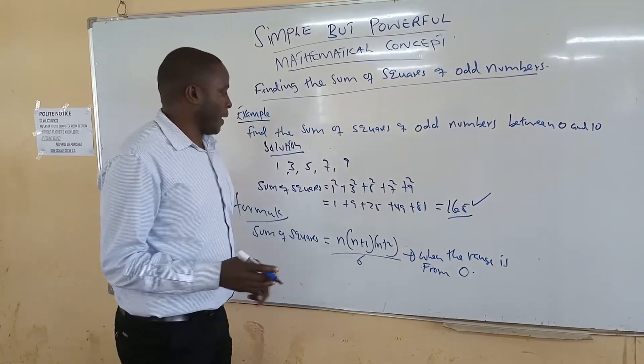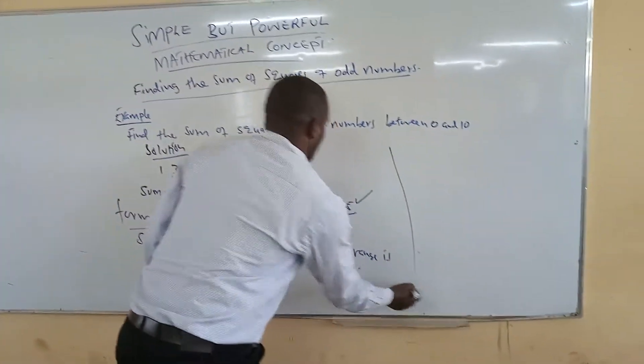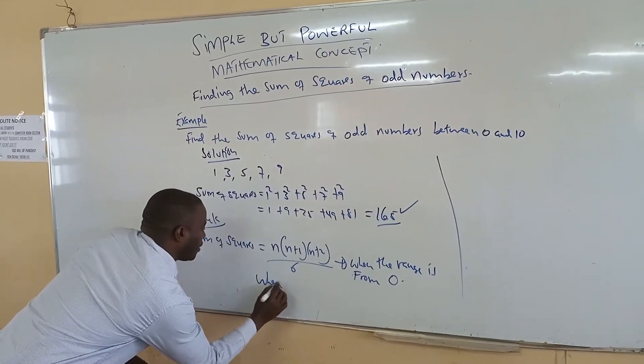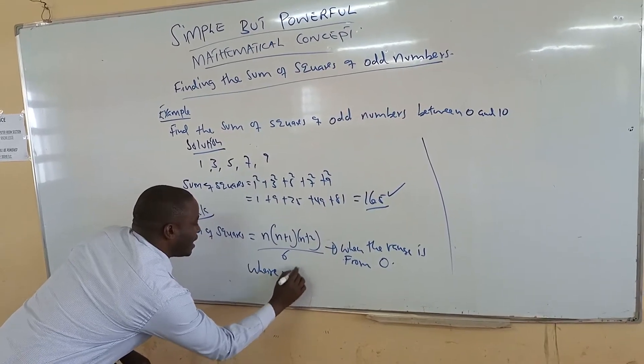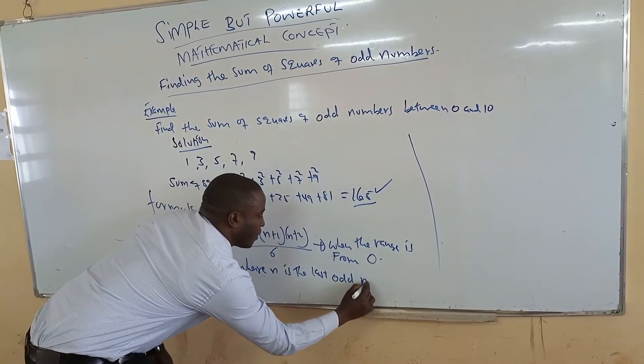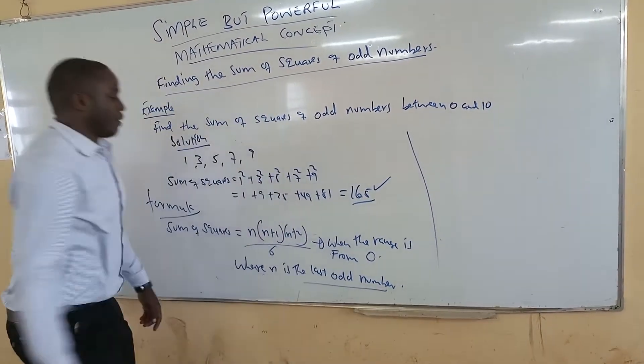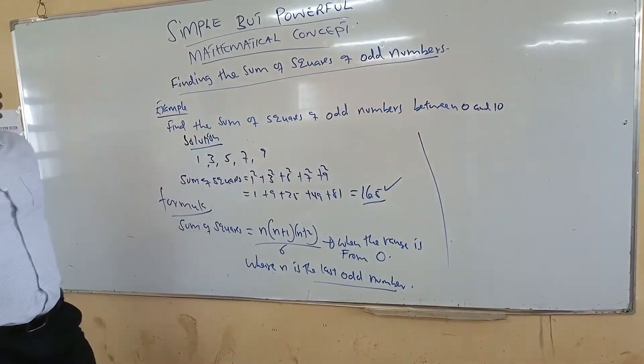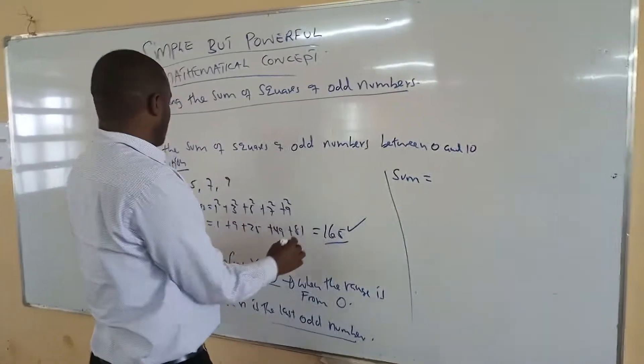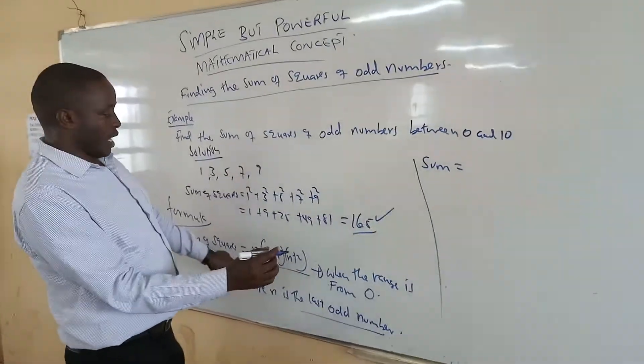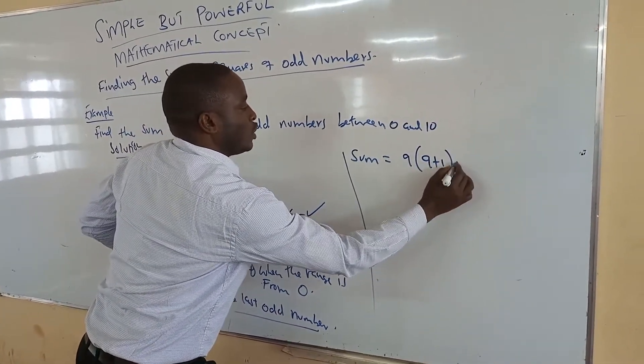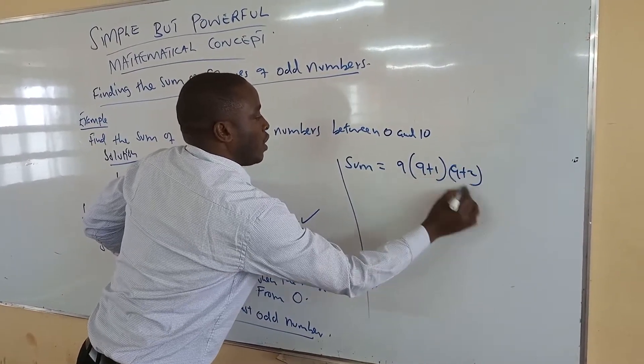So this formula can apply, for instance, in this question. Therefore, we could have said our n, where n is the last odd number. Our last odd number in this case is 9, and therefore the sum becomes 9 into n plus 1, that is 9 plus 1, into n plus 2, 9 plus 2, all over 6.